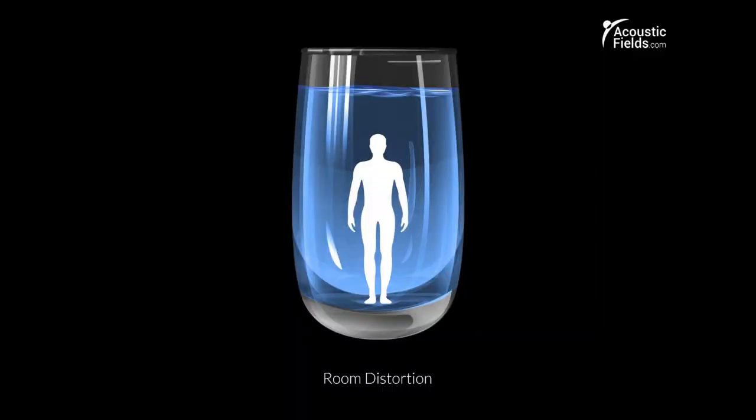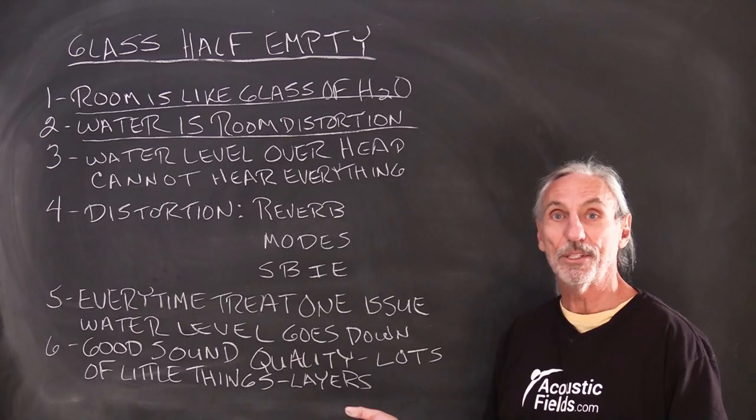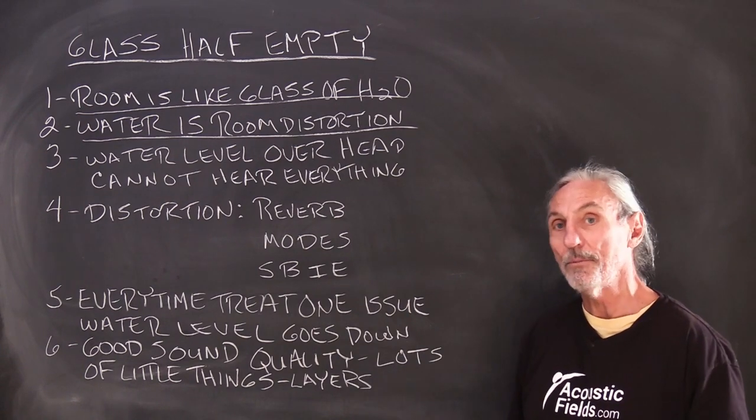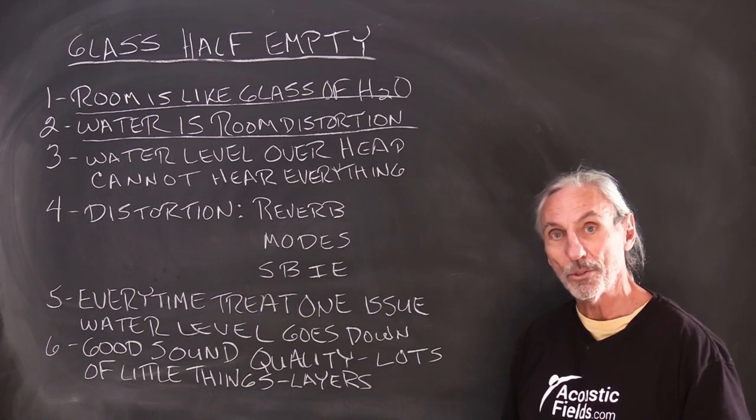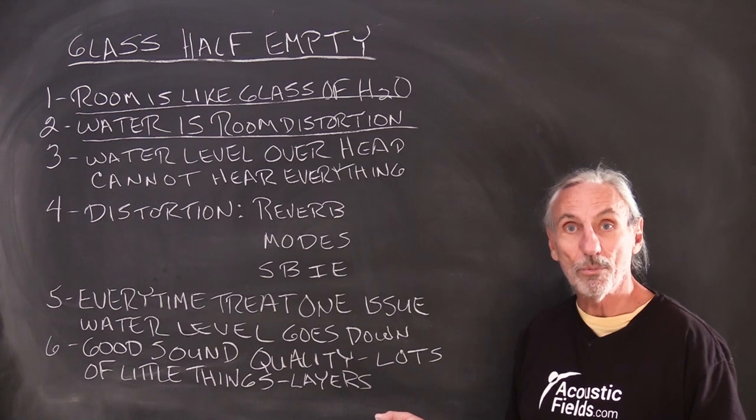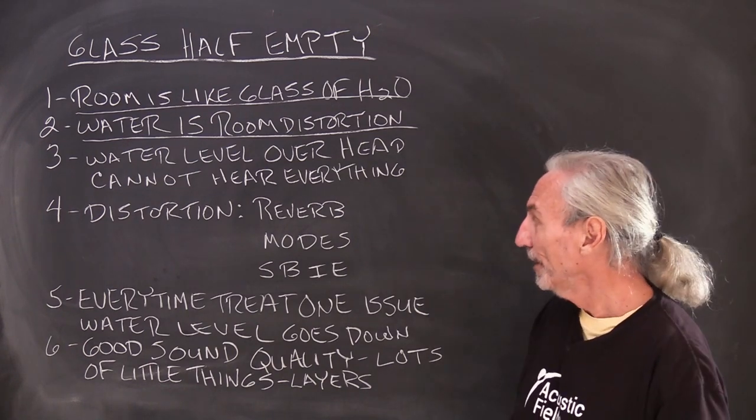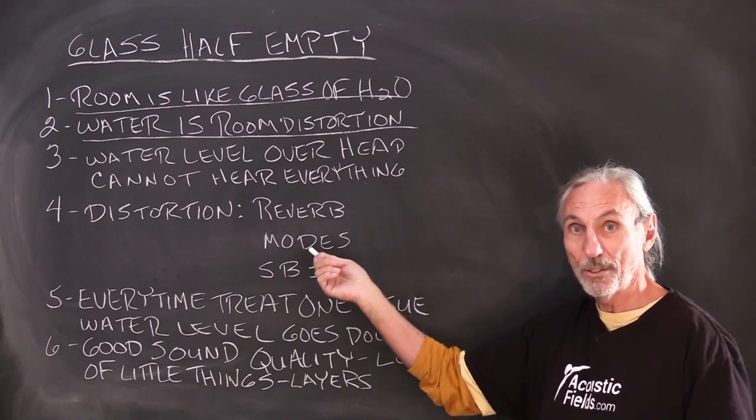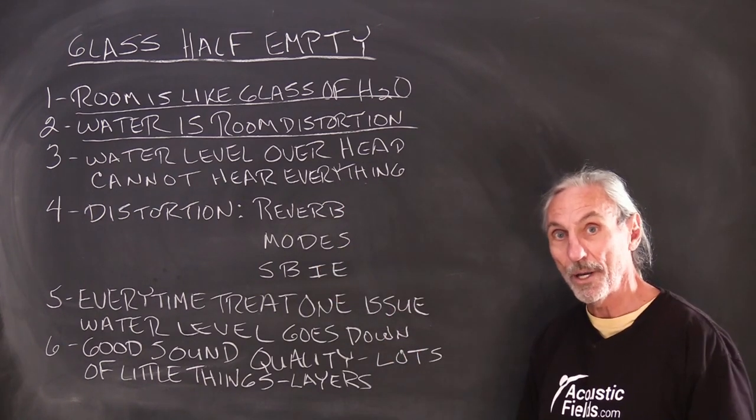As you can see in these graphics, the water level is over our head. So that's what distortion is in most rooms. Just a raw room that's had nothing done to it is full of distortion. It has high reverb times, it has low frequency pressure issues, even if you just walk into it. So rooms by definition are rooms in which there's a high level of distortion. So in our example here, the water level is way over our head.